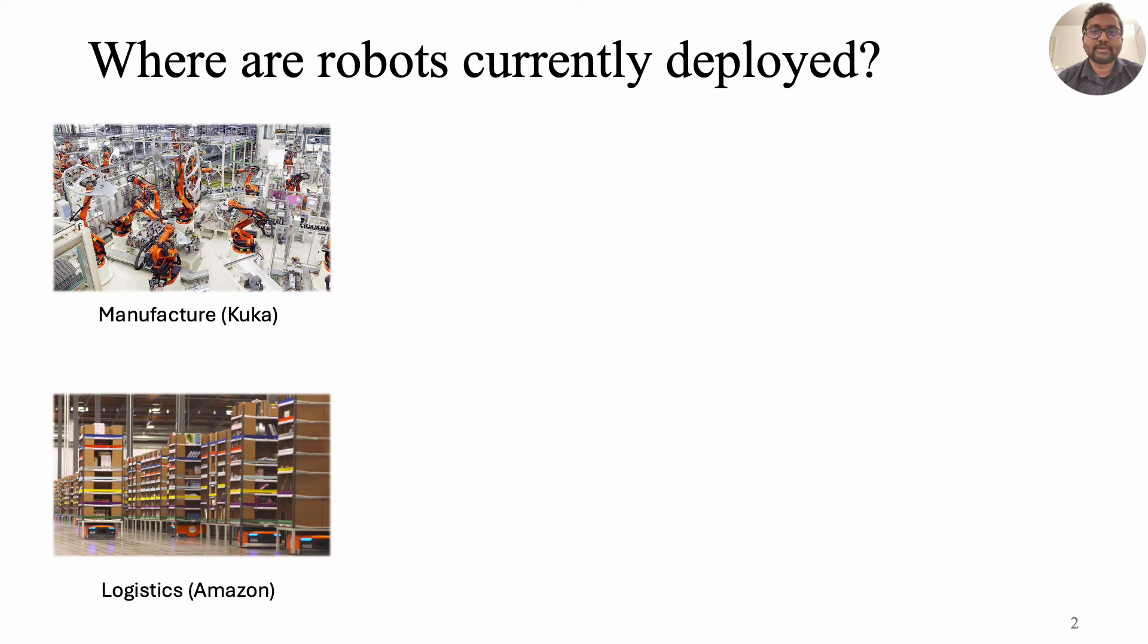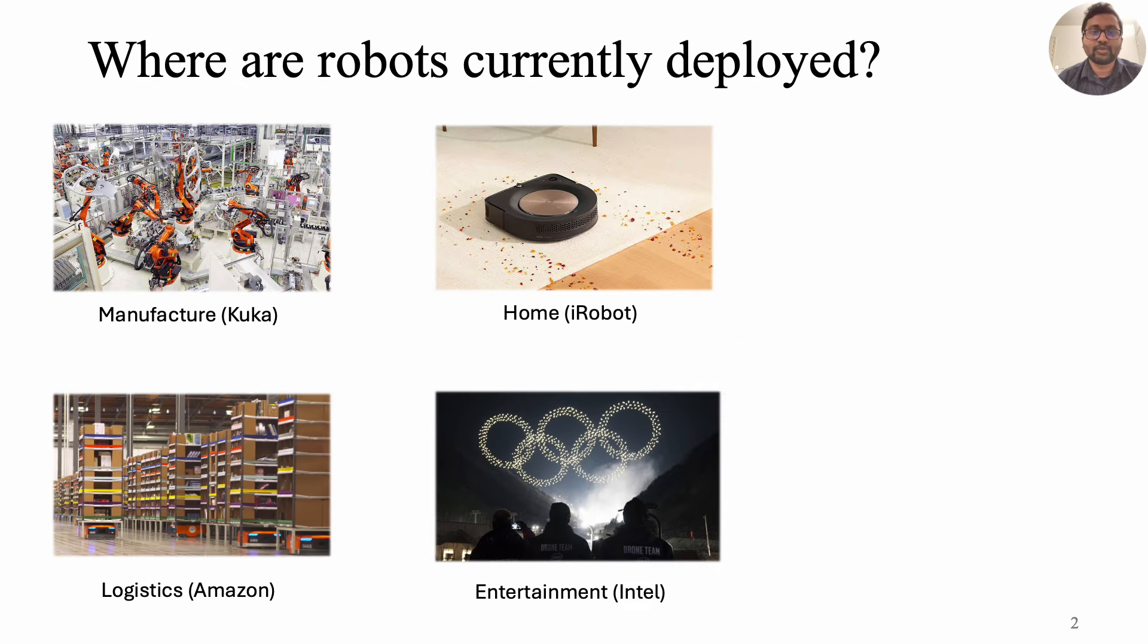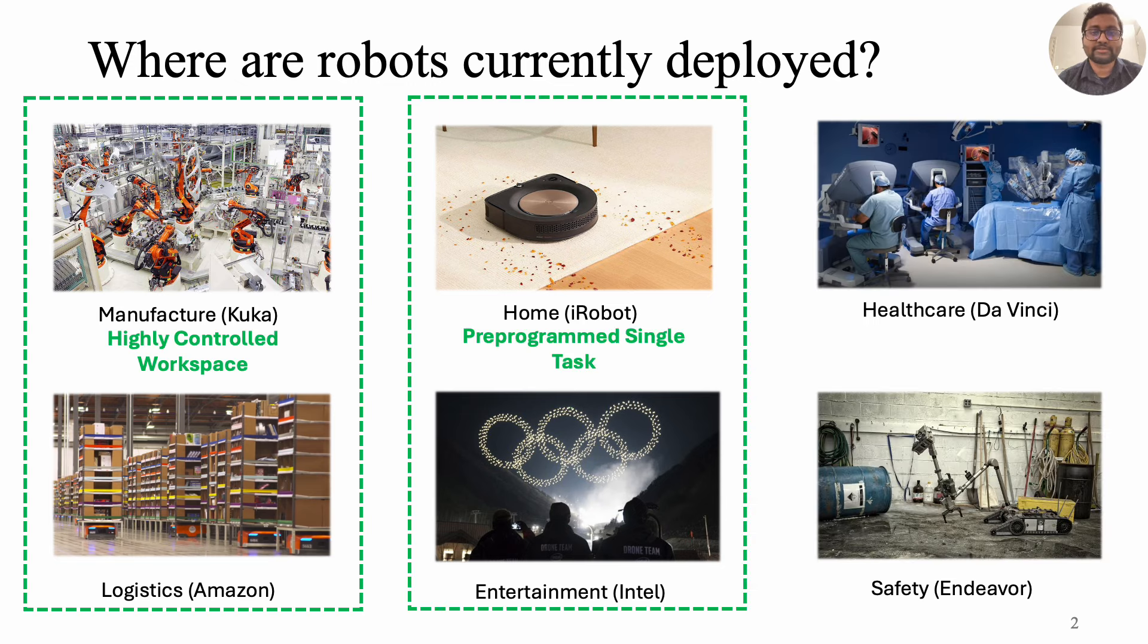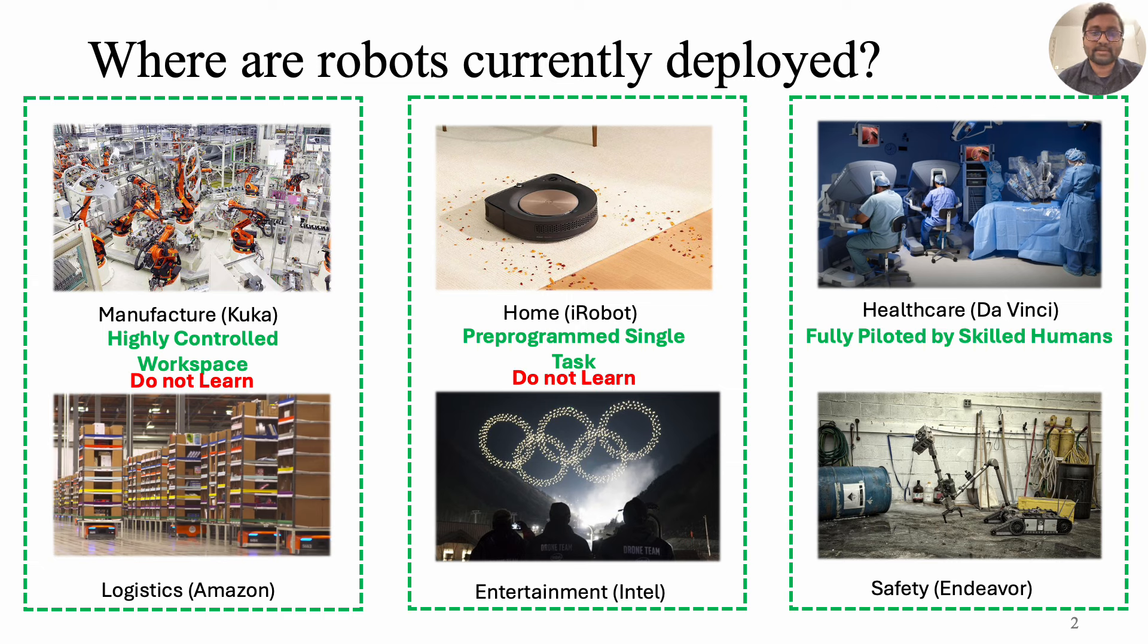Robots are often found in controlled places like factories, warehouses and homes working as vacuum cleaners or performing in drone shows. They are important in specific fields like surgery and defense but usually can only do repetitive preset tasks and can't learn anything or adapt.